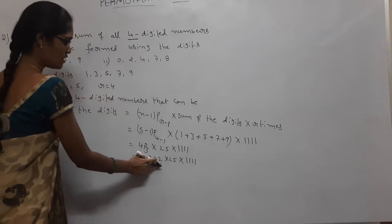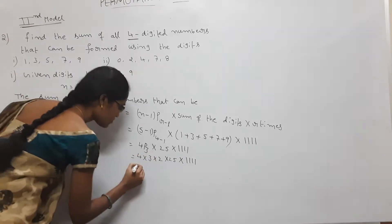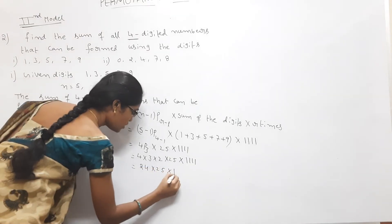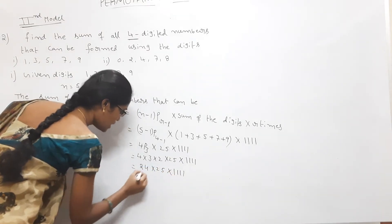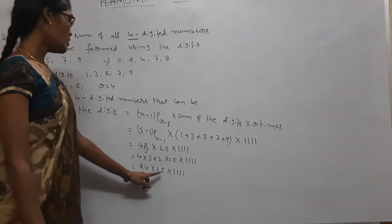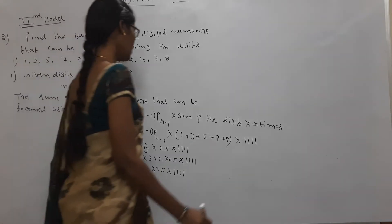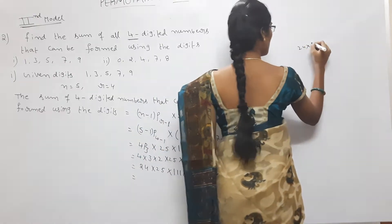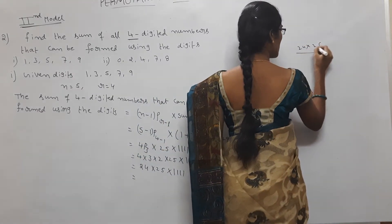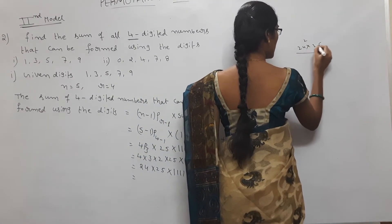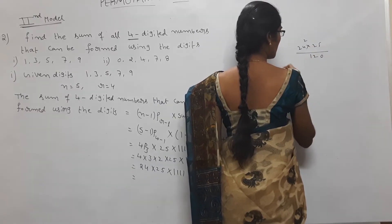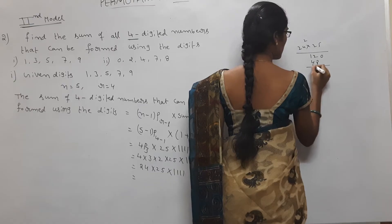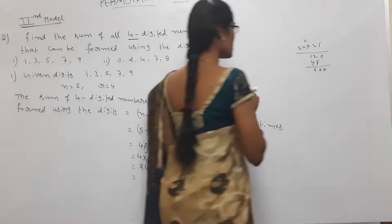4P3 = 4 into 3 into 2 = 24. So we have 24 into 25 into 1111. Now 24 into 25: 5 fours are 20, carry; 5 fours are 100 plus carry gives 600. So 24 × 25 = 600.